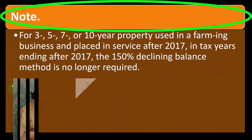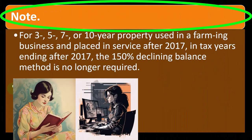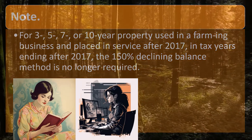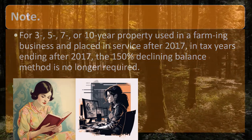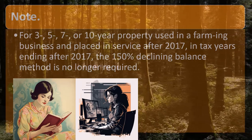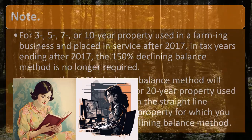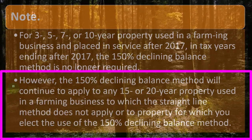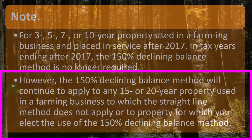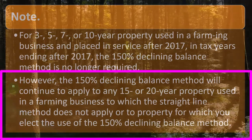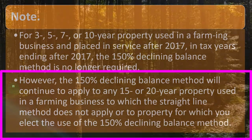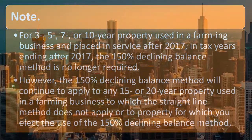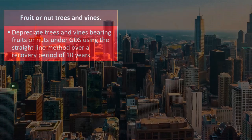Note: for three, five, seven, or 10-year property used in a farming business and placed in service after 2017 and tax years ending after 2017, the 150% declining balance method is no longer required. However, the 150% declining balance method will continue to apply to any 15 or 20-year property used in a farming business to which the straight-line method does not apply, or to property for which you elect the use of the 150% declining balance method.